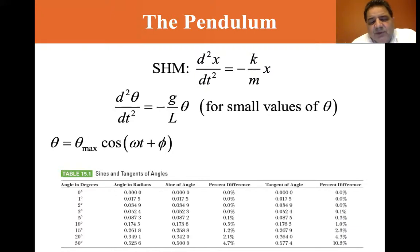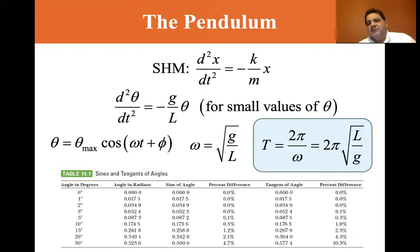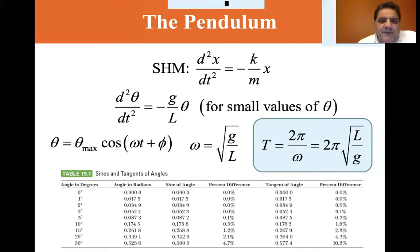So theta equals theta_max, where theta_max would be the largest angle deviation times cosine omega t plus phi, where omega is equal to the square root of g/L, and the period is equal to 2π divided by omega. And so since omega is equal to the square root of g/L, one over omega is equal to the square root of L/g, so the period is equal to 2π square root of L/g.